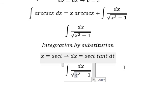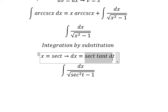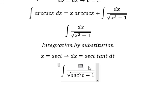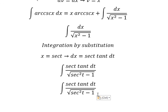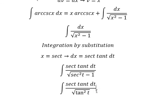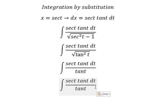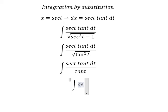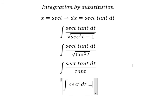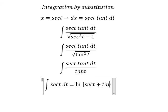We change x into secant of t and dx by the substitution expression. This gives us tan squared t under the square root, which simplifies to tan t. We then simplify tan t and get the integral of secant of t dt, which equals ln of the absolute value of secant of t plus tan t.